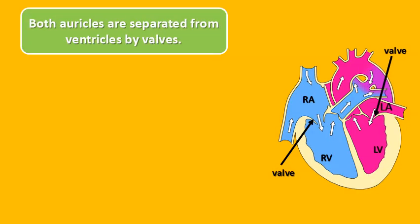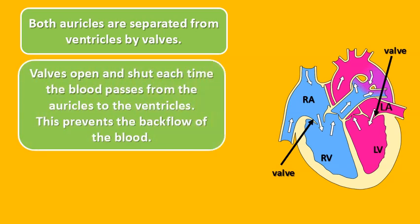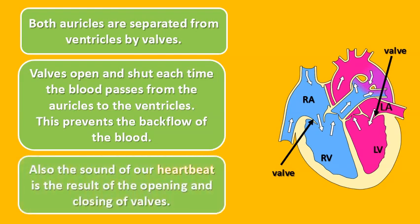Both auricles are separated from ventricles by valves. These valves open and shut each time blood passes from the auricles to the ventricles, which prevents the backflow of blood. The sound of our heartbeat is the result of the opening and closing of these valves.